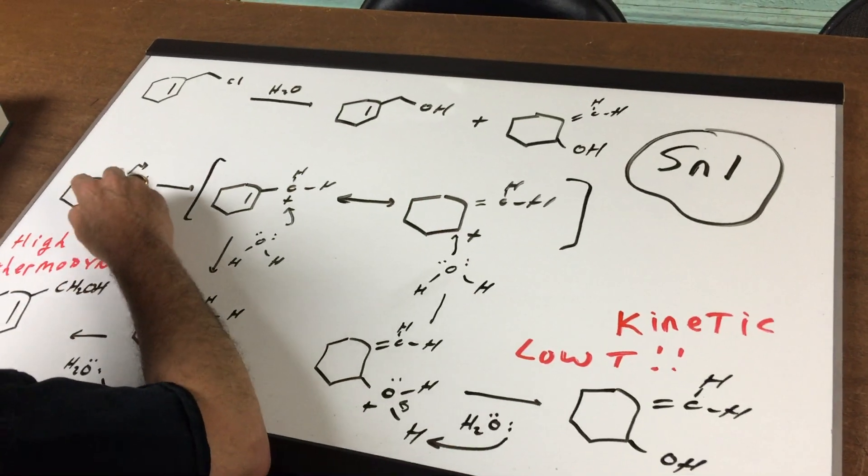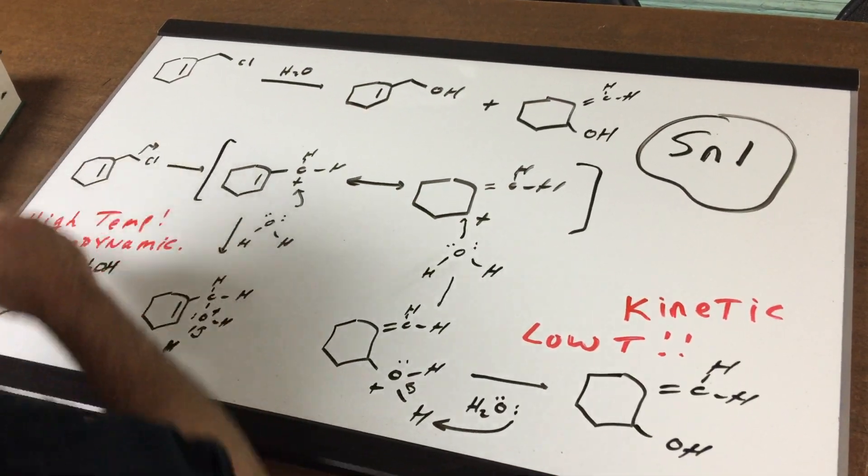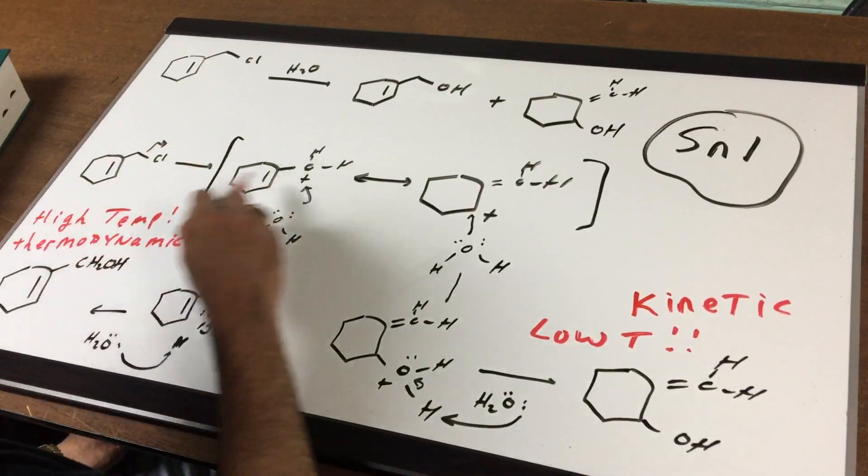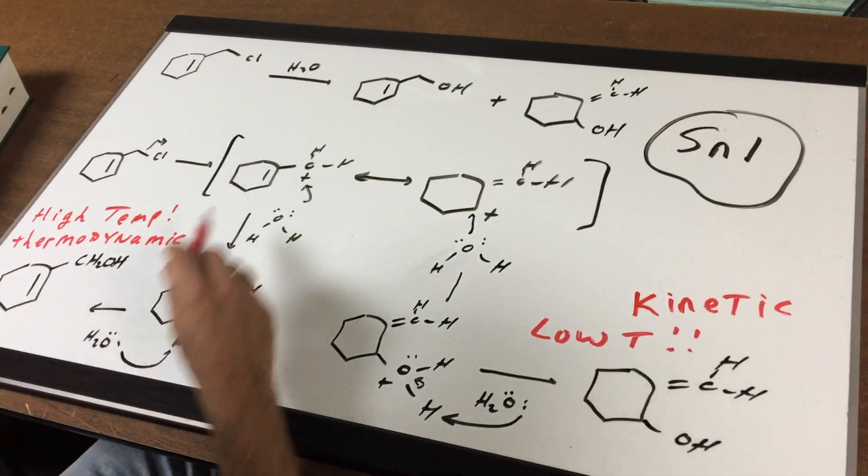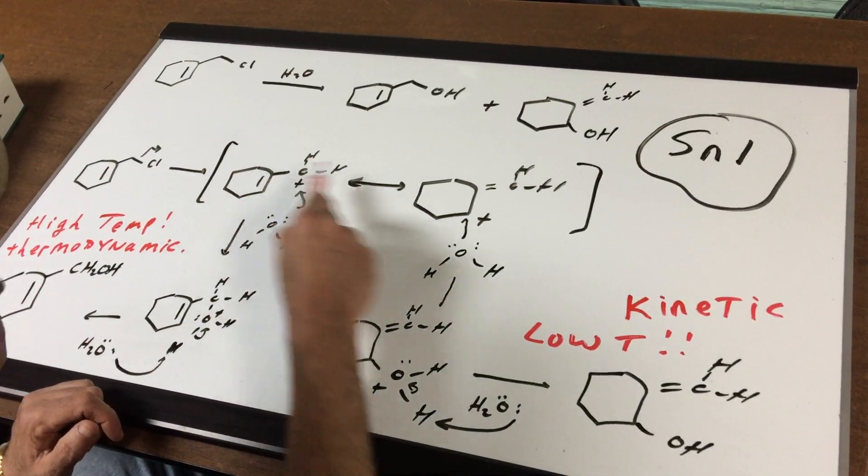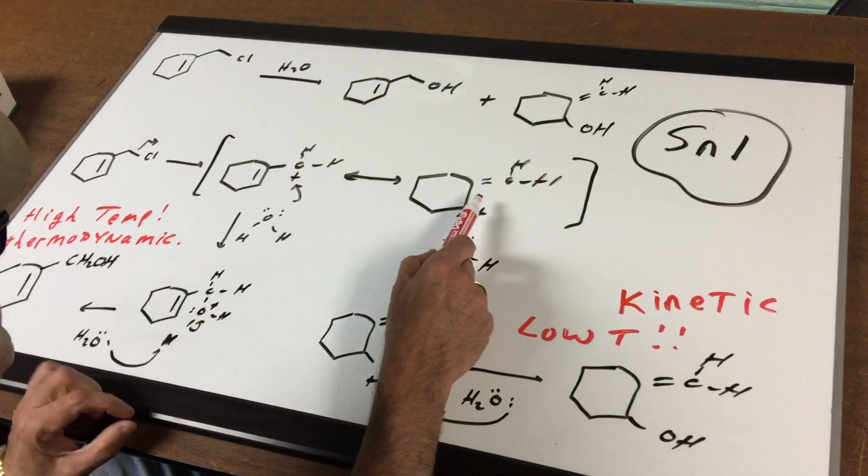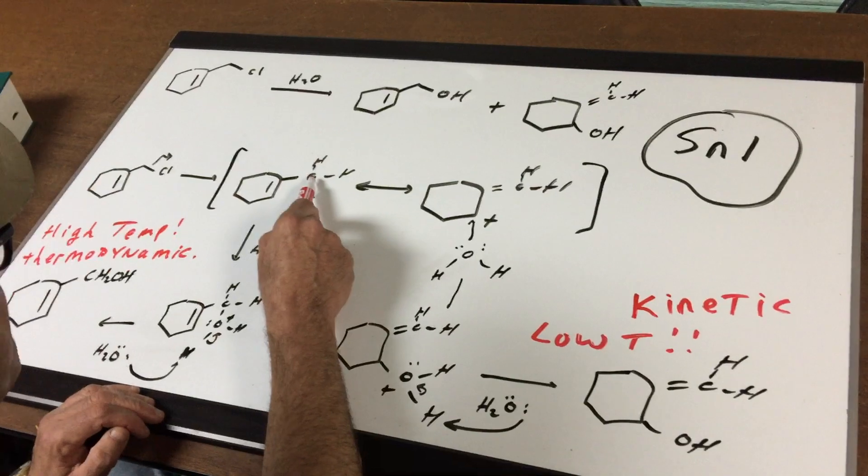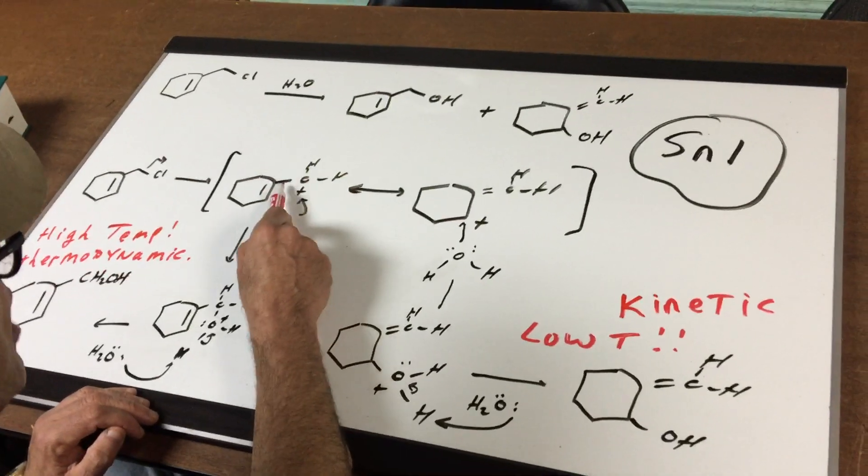The first thing I'm going to do here is show you that if I let the chlorine leave, you've got a carbocation. Now, you may scoff at this and say, oh, it's a primary, but it's got resonance. And the resonance form, this primary is actually a primary allylic, by the way.